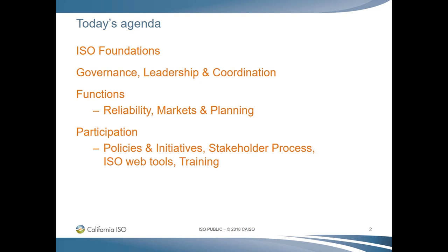Following that, we will dive into what we do here at the ISO in the Reliability and Operations section. Reliability is the cornerstone of the ISO, so we'll discuss how we keep the high-voltage grid up and running. The Operations section will focus on important factors that affect reliability, such as the mix and adequacy of generating resources and the analysis of changes in supply and demand.